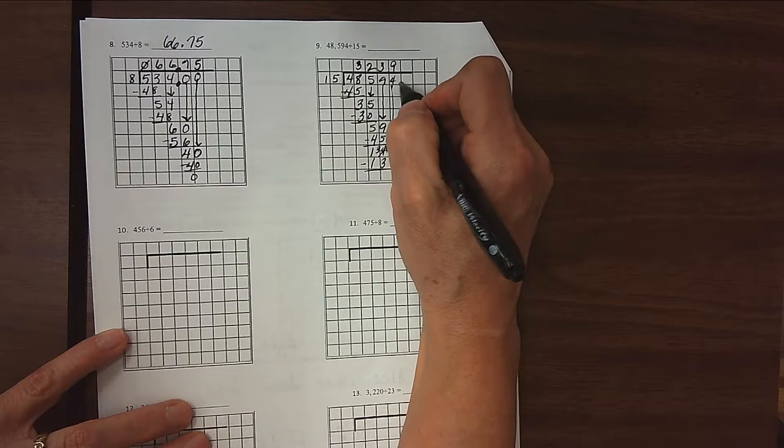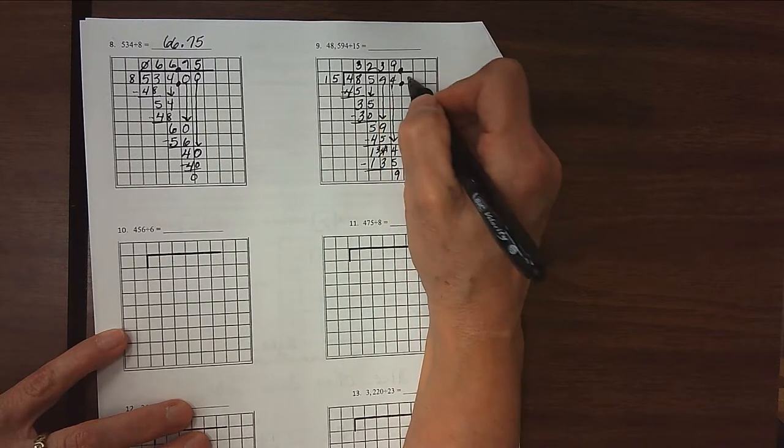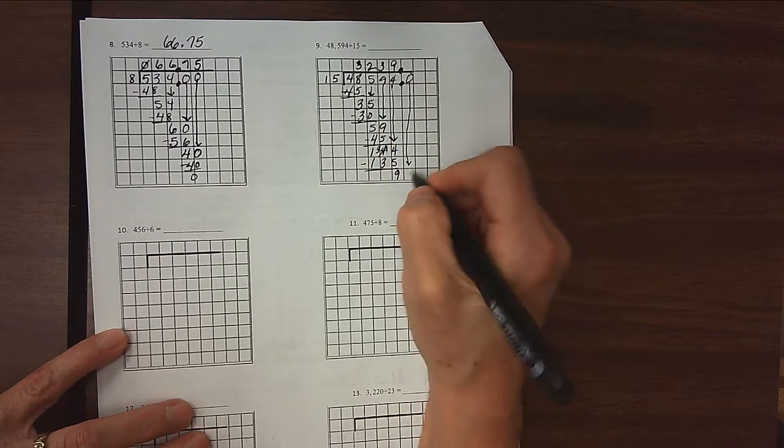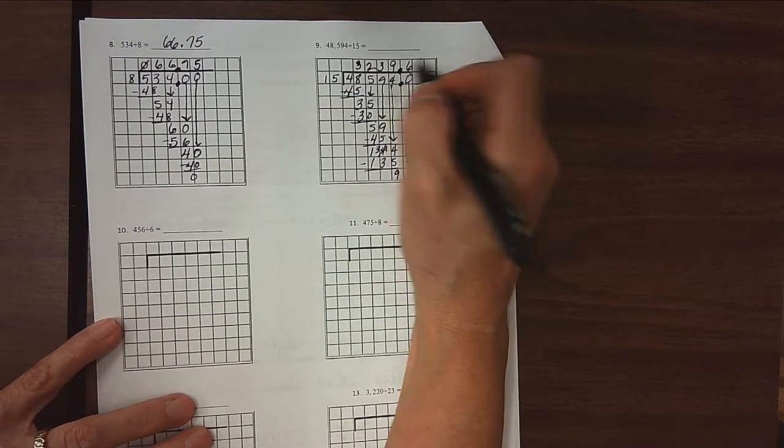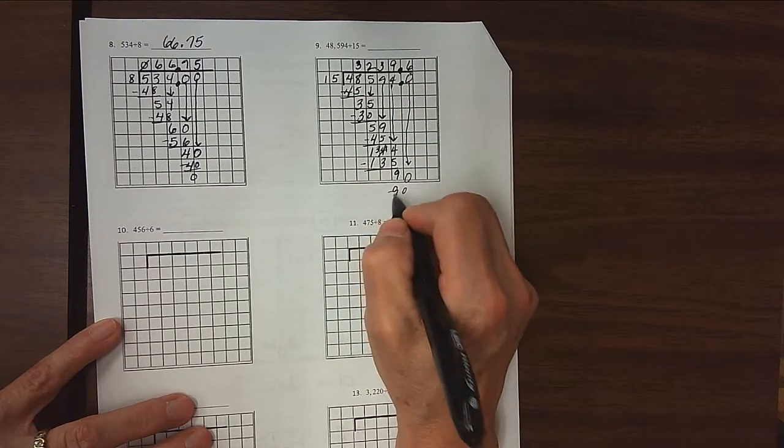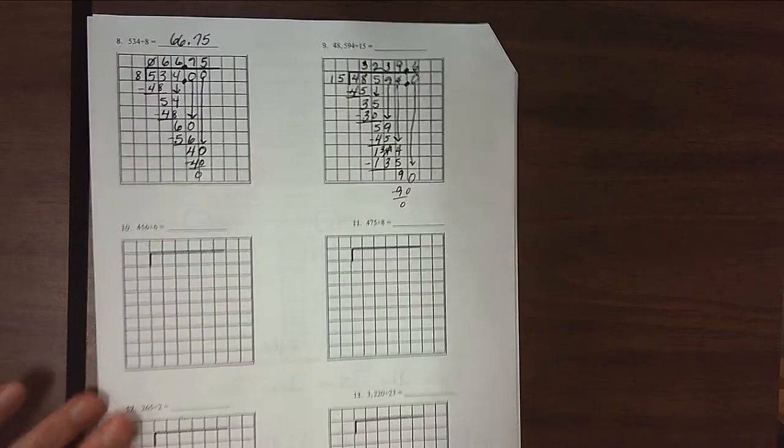Can't have a remainder, so add a decimal point in and out of the house. Add a 0 only in one place in the house. Bring it down. 15 divides into 90 six times. And 6 times 15 is exactly 90. And so we're done with that one. All right, next problem.